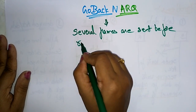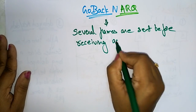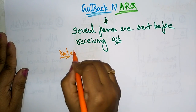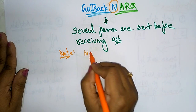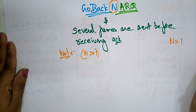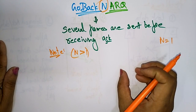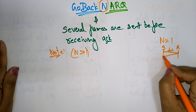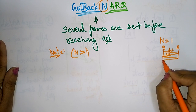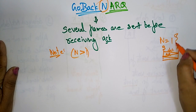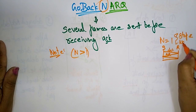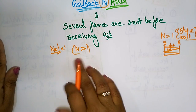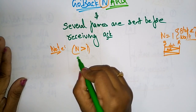In Go-Back-N, several frames are sent before receiving the acknowledgement. Note that N should be greater than one. If N equals one, only one packet can be sent and the sender must wait for acknowledgement before sending another — that simply acts like Stop-and-Wait. So the window size should be greater than one.